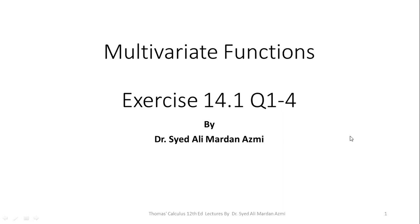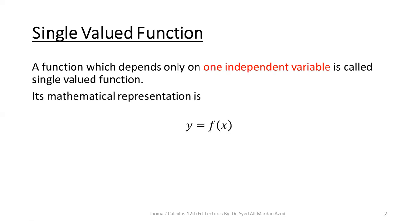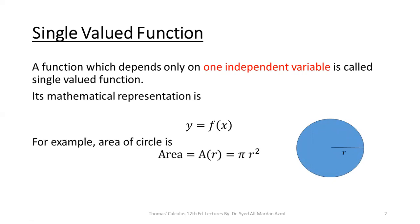First of all, we will revise what is a single-valued function from our basic calculus. If a function depends only on one independent variable, then it is called a single-valued function. Its mathematical form is y = f(x). For example, if a circle has radius r, then the area of the circle is πr². Here π is fixed and the only variable is r, so the area of a circle is a single-valued function.